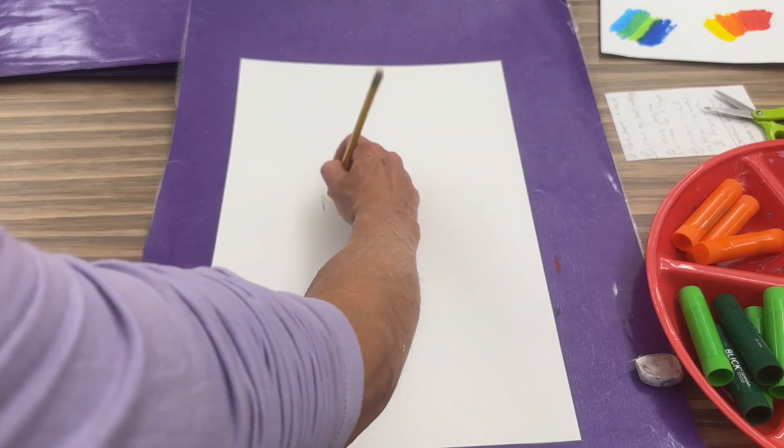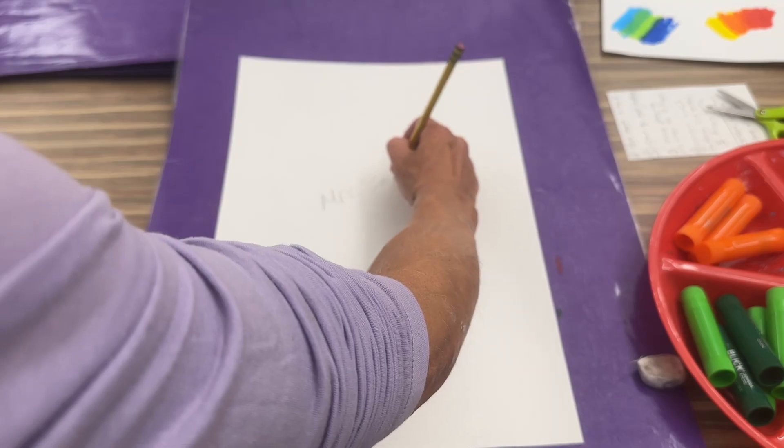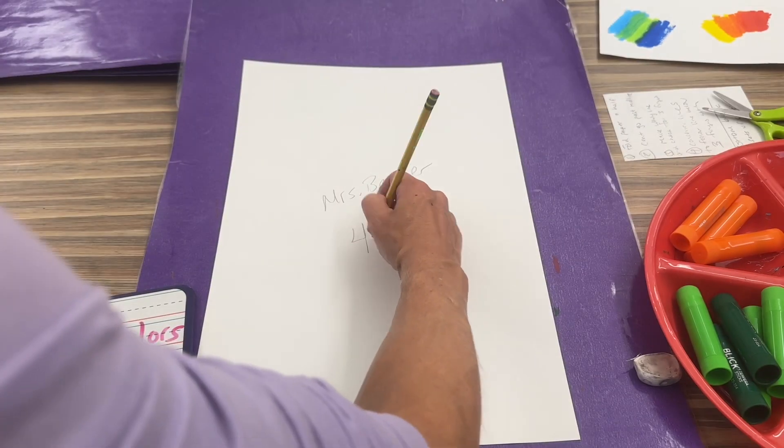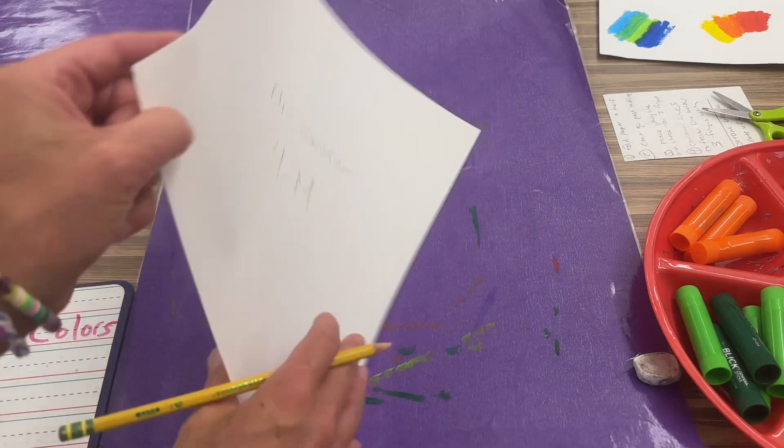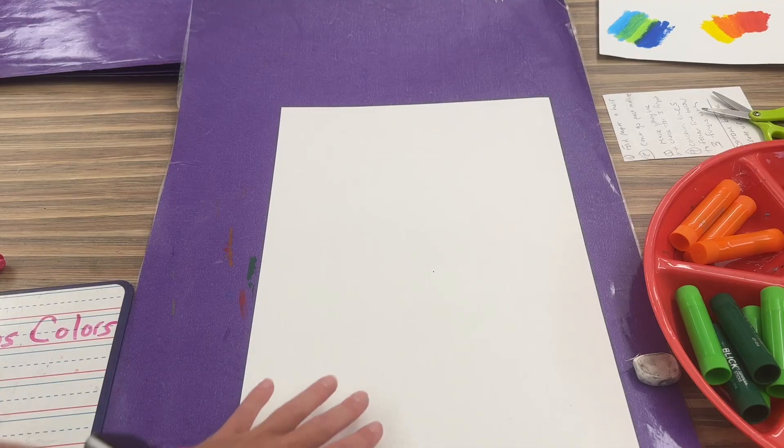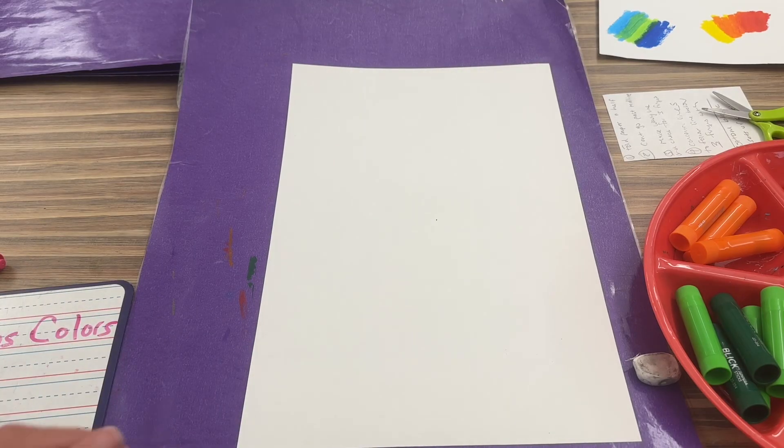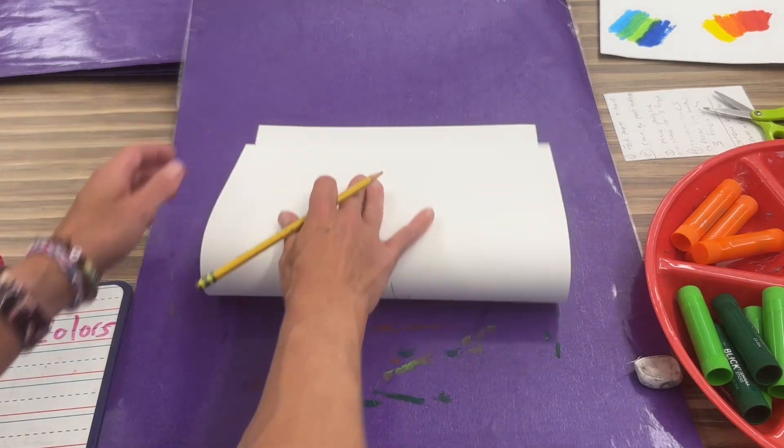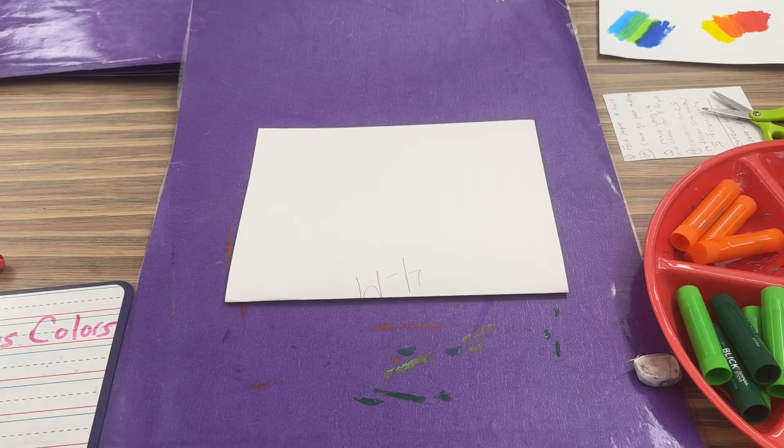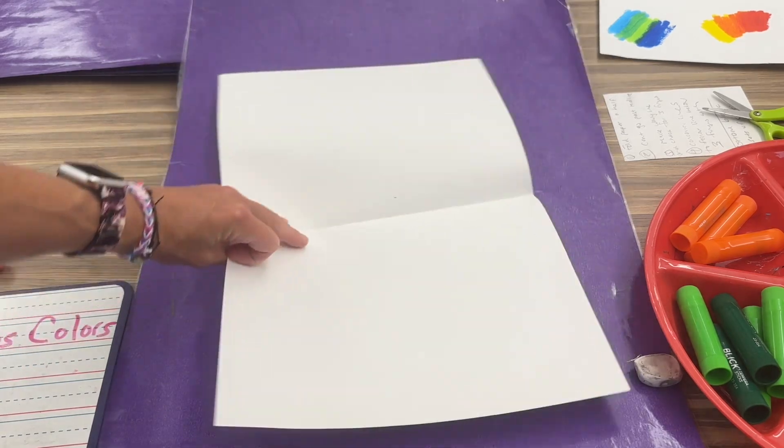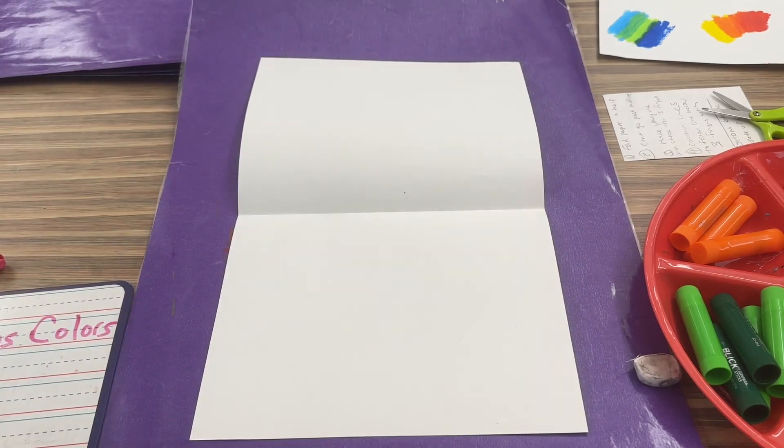We're gonna write our name and our art. Then we are gonna turn our paper over. If you notice I'm holding the paper tall like a tower or vertical. You're gonna take the bottom and go up to the top and fold it. Then you are going to open it up, and this line is going to be where you can't pass.